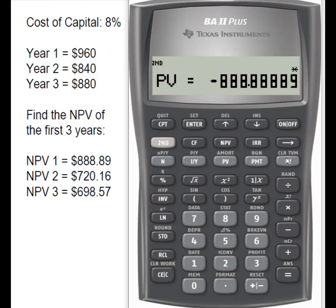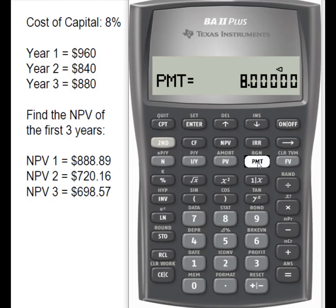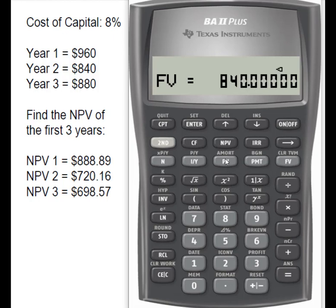Now we're going to do year two. We clear our time value of money keys. In this case, N is going to be two, same IY of 8%, still no payment, and the future value is going to be that cash flow of $840. Now we compute the present value.